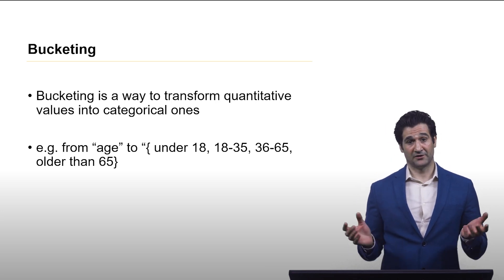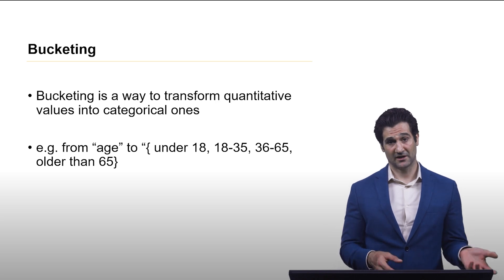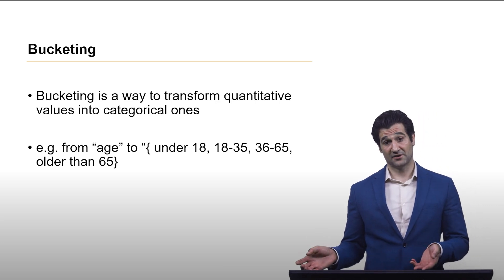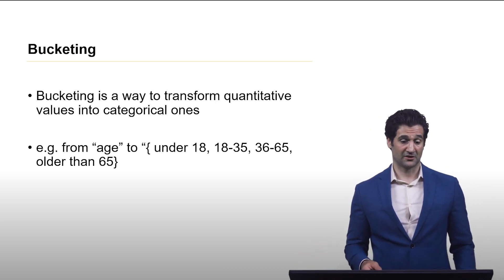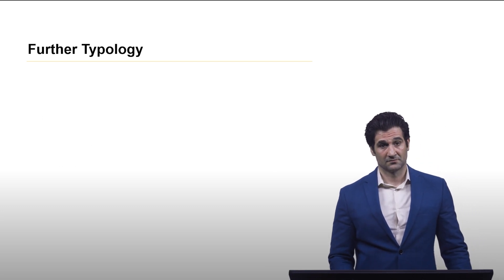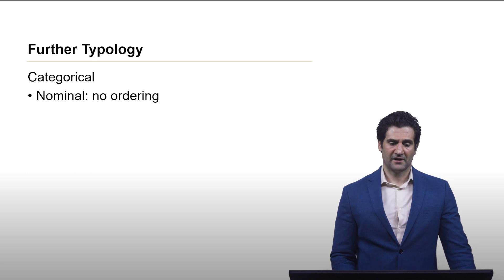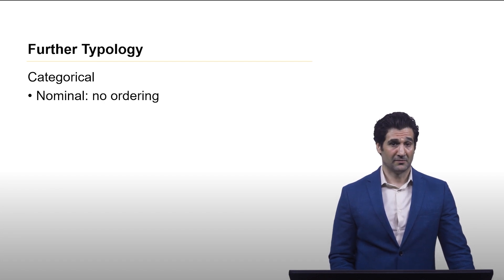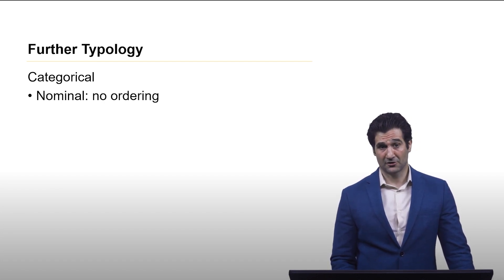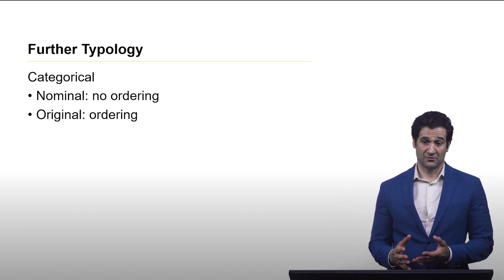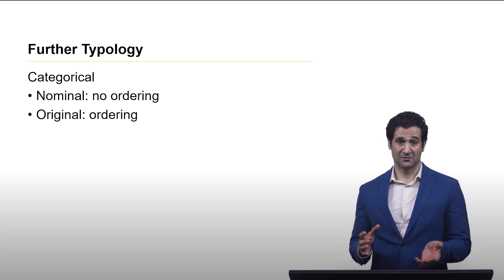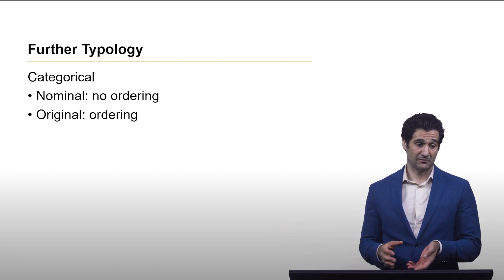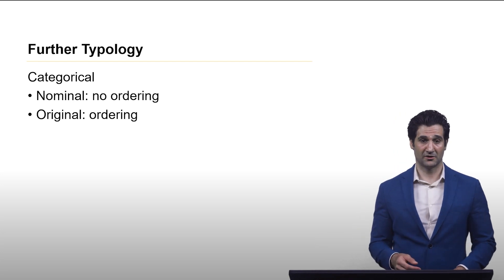An easy example to think about with bucketing is age. You can take someone's age and say: are they under 18, between 18 and 35, 36 to 65, et cetera. We see this done all the time, especially in consumer applications. With categorical data, we can break it down further into nominal, where there's no ordering — things like male or female, or the species of flower you're looking at. And there's ordinal, where there is an ordering. That age example from the previous slide, where we changed age into categorical data, actually has an ordering associated with it: below 18, 18 to 25, et cetera.